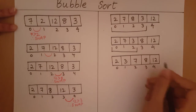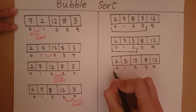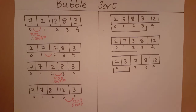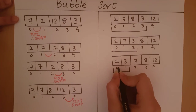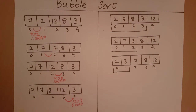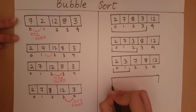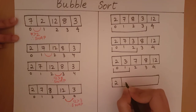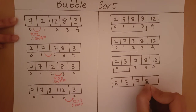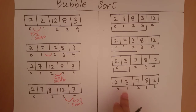Now 7, 8, and 12 have come to their correct positions. Within the remaining range, we compare 2 and 3 — they are in the correct order, so there is no swapping to be done. We get an array which looks like this. Now 3, 7, 8, and 12 have all come to their correct positions.